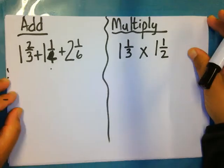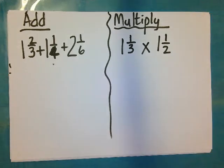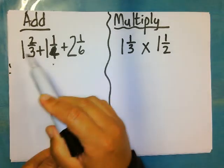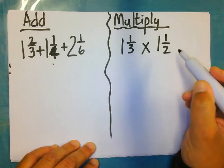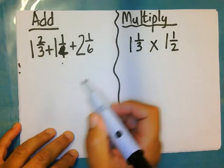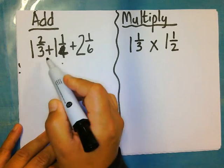Hi grade sevens, also in your test on Thursday you must be able to add mixed numbers and also to be able to multiply mixed numbers. So when we add mixed numbers we first add the whole number, so 1 plus 1 plus 2 is 4.